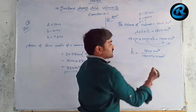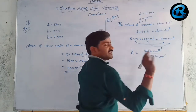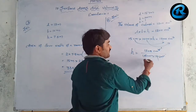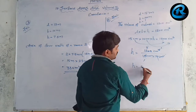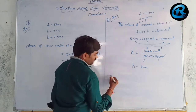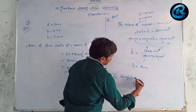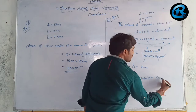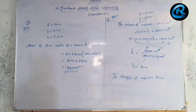Cancelling units and simplifying: h = 1200 ÷ 150 = 8 centimeters. So the height of the cuboid is 8 cm. Look at the answers and take a screenshot.